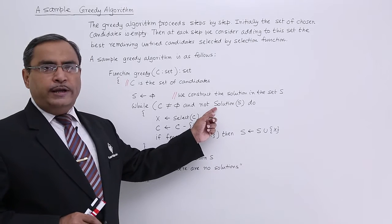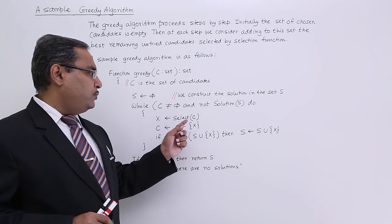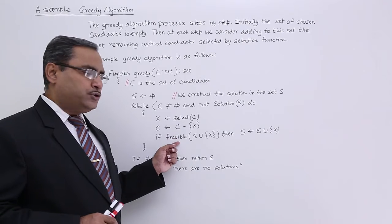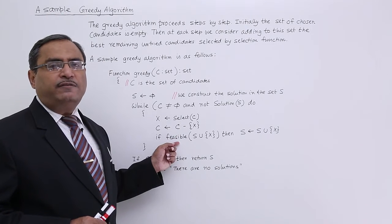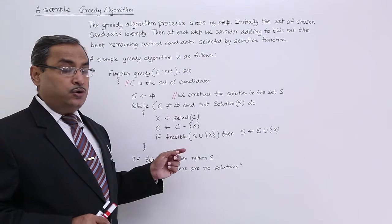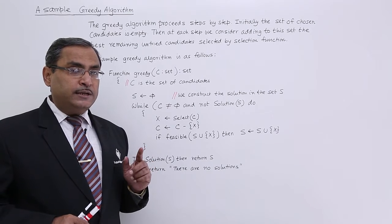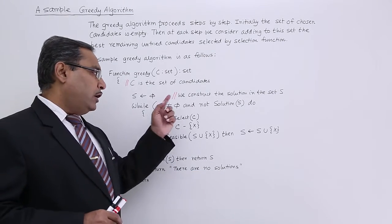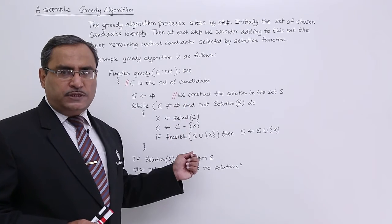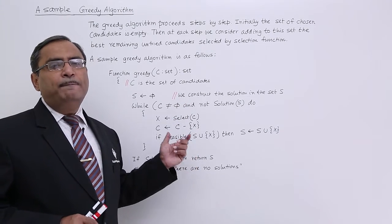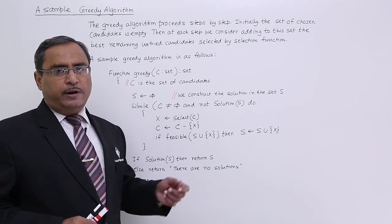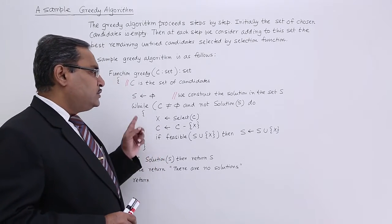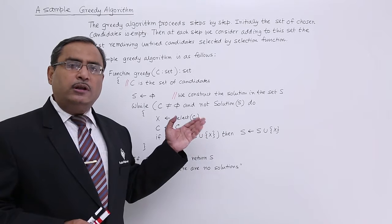Here we have already used the solution function, the selection function, and the feasibility check function — feasible. The function that remains implicit is the objective function. I mentioned that in the previous video — there is an objective function which you cannot see being explicitly called; it remains implicit in our greedy algorithm. So there are four functions in total, and in this way the while block gets executed.